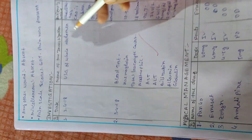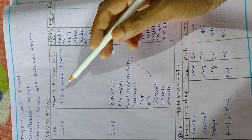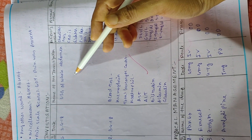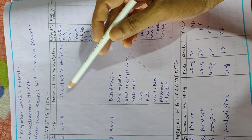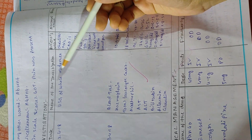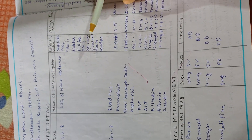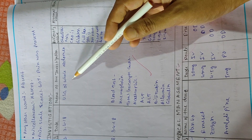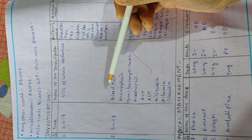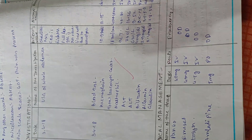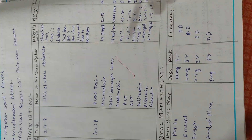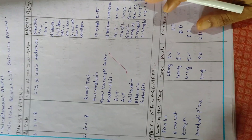Next is investigation. For Cholelithiasis patients, the investigation section should include the date, name of investigation, patient's value, and normal value. In case of Cholelithiasis, investigations include USG whole abdomen, and blood tests such as liver function values — ALT, AST, bilirubin, and albumin.